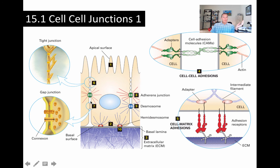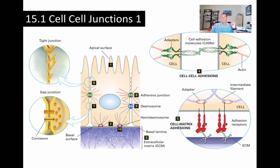Number seven is a gap junction, shown blown up here. These allow the exchange of molecules and ions between cells. Molecules and ions of a certain size can pass back and forth between two cells, which are connected by these kind of channels or pores, about three nanometers in diameter, formed from proteins called connexons.